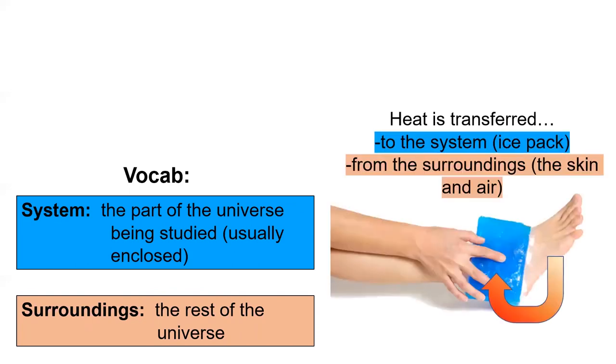For example, if someone is using an ice pack to cool down their ankle, we would usually say that the system is the ice pack since it is a closed container. Heat will flow from the surroundings, which are the room and the body, into the ice pack.